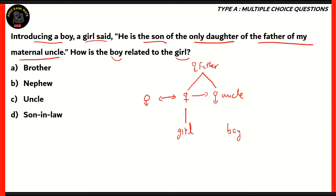How is the boy related to the uncle? The girl says he is the son of the only daughter of the father of my maternal uncle. Since the boy is the son of the only daughter, and since we know the mother of the girl is the daughter of this grandfather, we concede that the boy is also the son of the girl's mother. So technically, the girl and the boy are siblings — the boy is the brother of the girl.